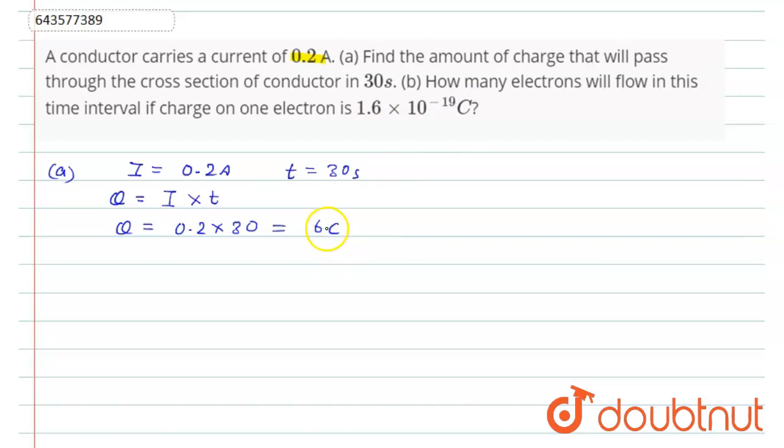So to find the number of electrons, what we have to do is just divide 6 coulomb by 1.6 × 10^-19 coulomb. So now, number of electrons will be...